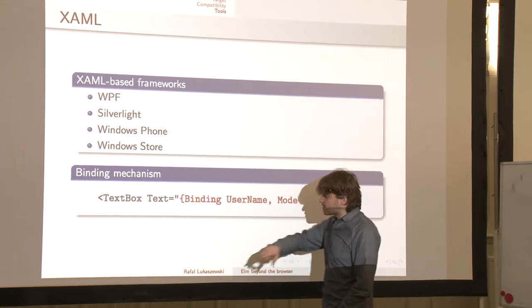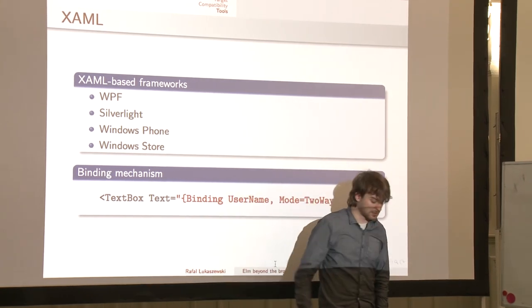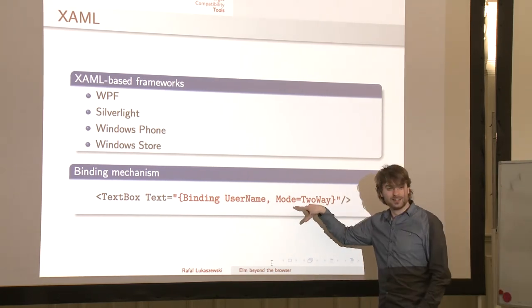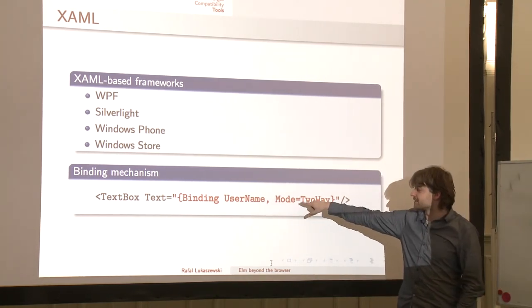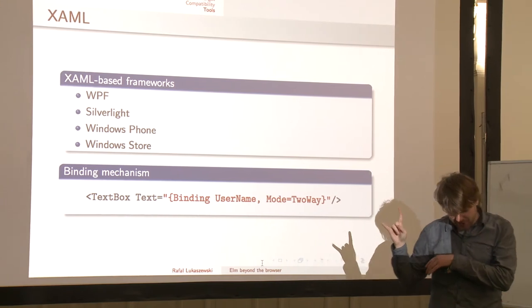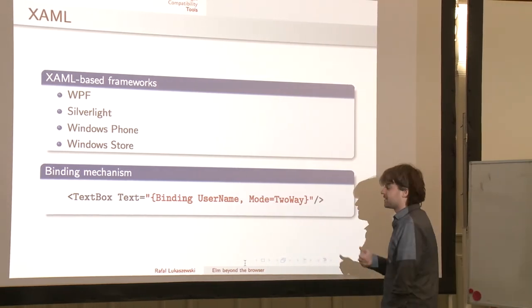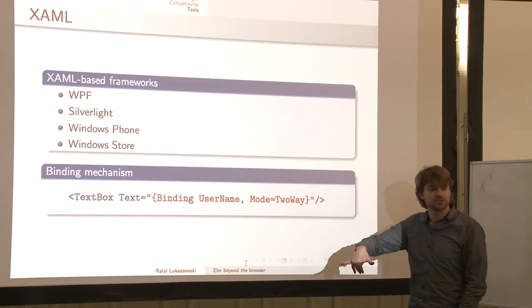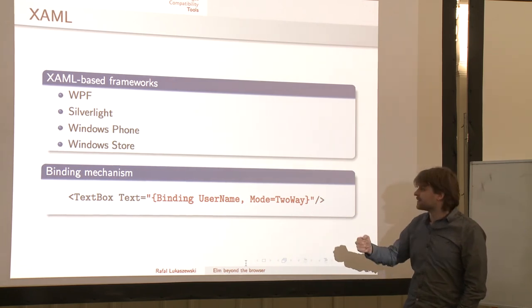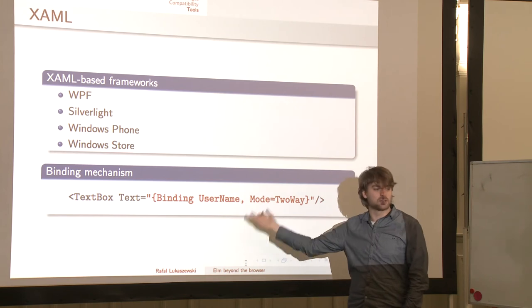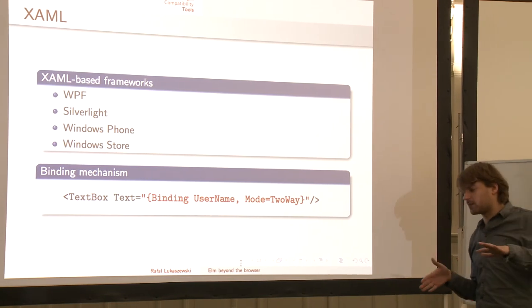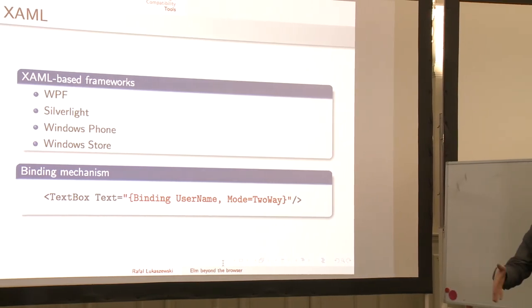What you're doing here is binding the username property from the view model to a text box. When you change the property username in the view model class, that change appears in the UI seamlessly — you don't have to do anything. And if it's a text box that receives input from the user, doing mode two-way binding means changes are propagated back to the model. Like I said, it's actually some kind of reactive programming.